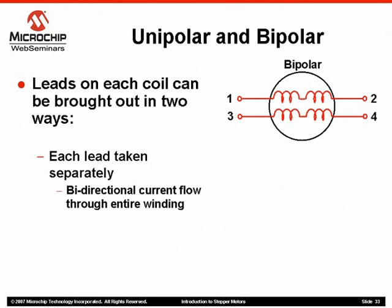The first example is a bipolar configuration. Here you can see that each winding lead is brought out separately. This type of winding, depending on the voltage applied and to which lead, can produce current flow in two directions. This allows each stator pole to be magnetized to either north or south.